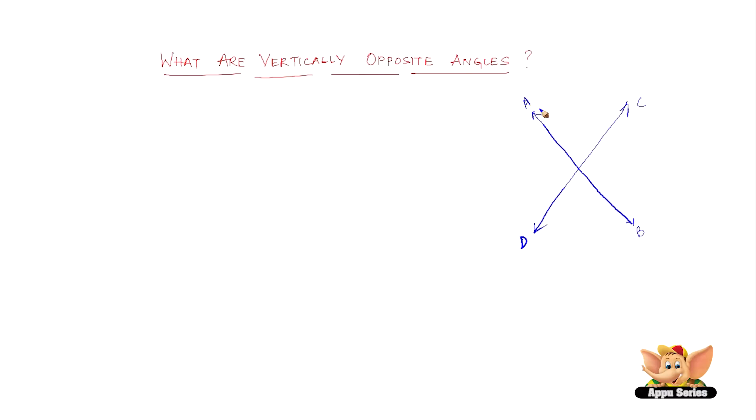When these two straight lines intersect, if you notice, there are four angles formed. One is this, one is this, one is this, and one is this.